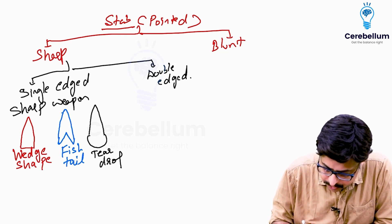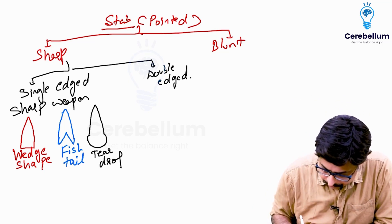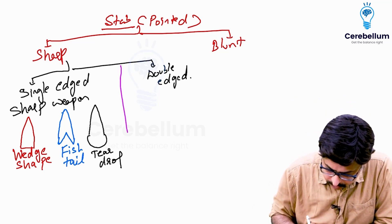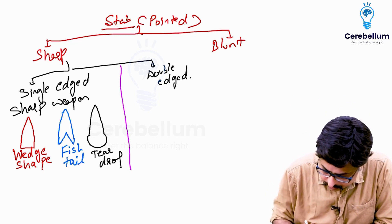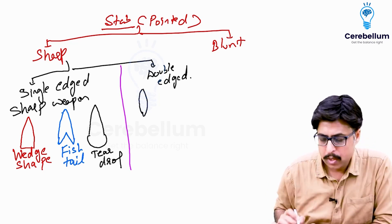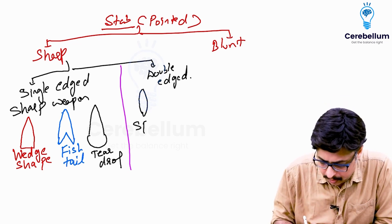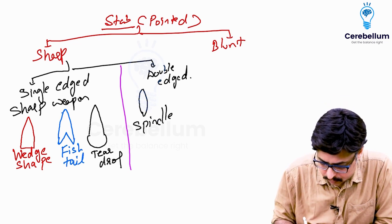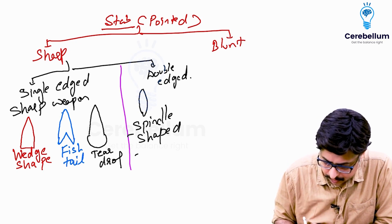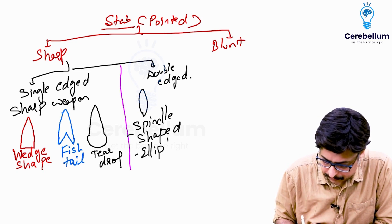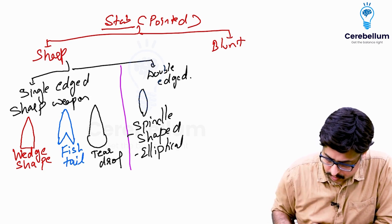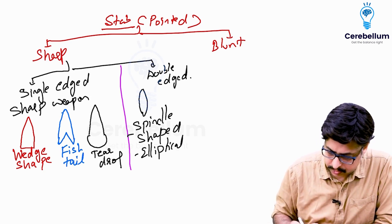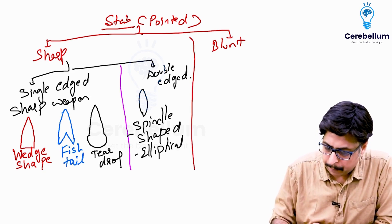In a double-edged weapon, both ends will be sharp, so it will be simply like this — both ends sharp. This shape is called spindle shaped or we can say elliptical.